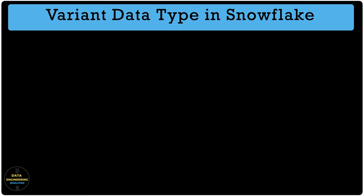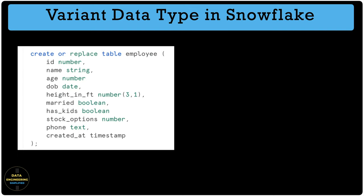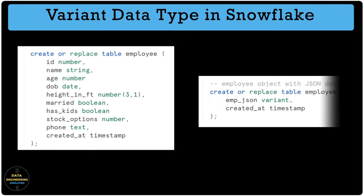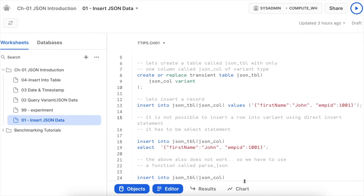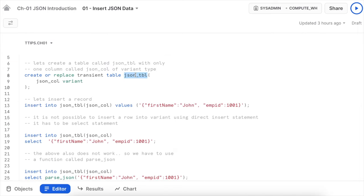If you have an employee table with different attributes, you create DDL statements mapping attributes to their respective data types. If the employee object is wrapped in JSON, Snowflake has a data type called variant for this. Let's create an employee table with a variant column and insert a JSON object. I am in my Snowflake Snowsight WebUI. Let's create a table called json_table with one column called json_column of data type variant.